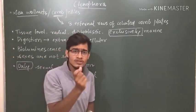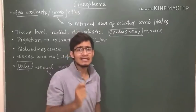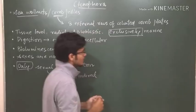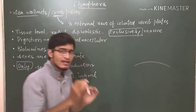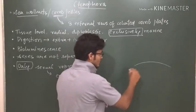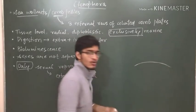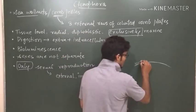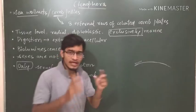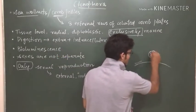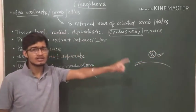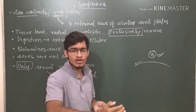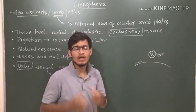The Ctenophora are known as sea walnuts or comb jellies. Why comb jellies? Because they contain eight external rows of ciliated comb plates. Their body has eight rows of comb plates. These are plate-like structures which are ciliated. And if there are eight different rows, this word is very important here, you have to memorize the number that is eight. So eight external rows, since they are present on the external body surface, they are ciliated.